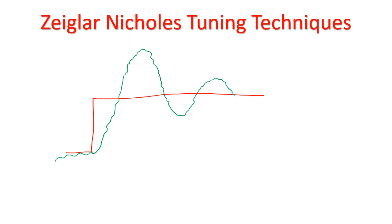The system is properly tuned if the first peak is twice the second peak, and the second peak is twice the third peak. So the second peak is almost half of the first peak, and the third peak is half of the second peak. If we call them A and B, then B divided by A is almost one quarter — hence the term quarter wave decay. The aim of this method is to tune the control loop so the response to a set point change decays in this quarter wave fashion.